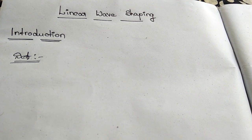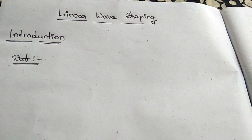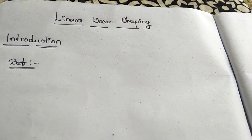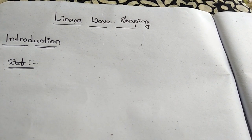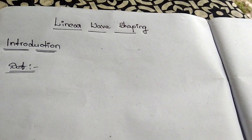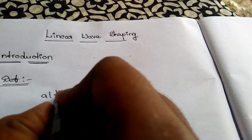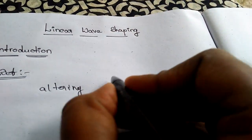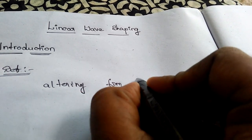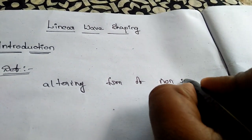Again, the definition: the process of altering the form of a non-sinusoidal signal by transmitting through a Linear Network — altering the form of a non-sinusoidal signal.